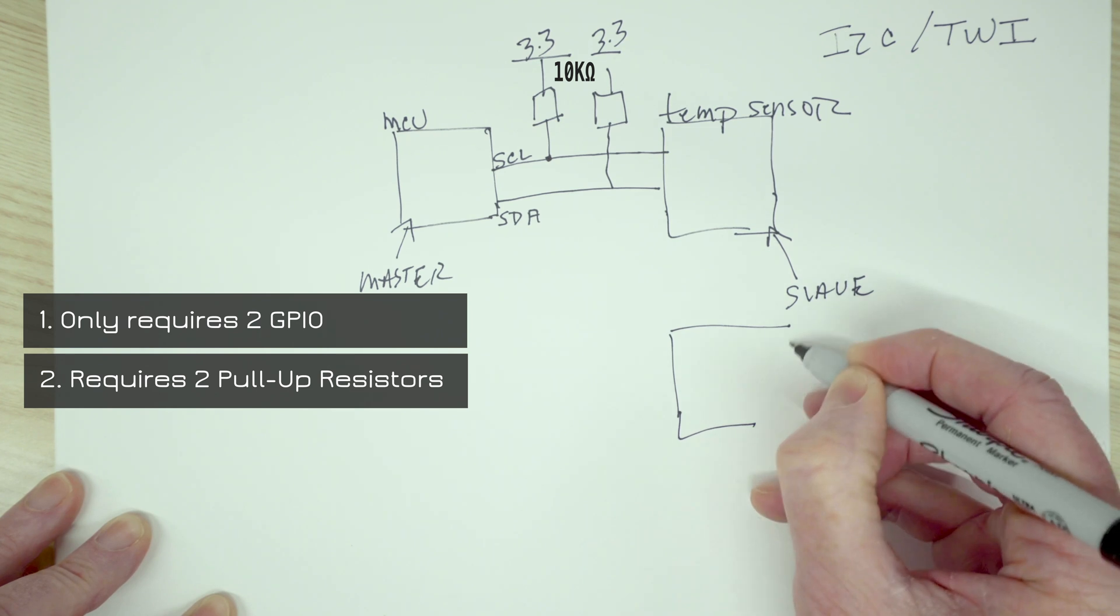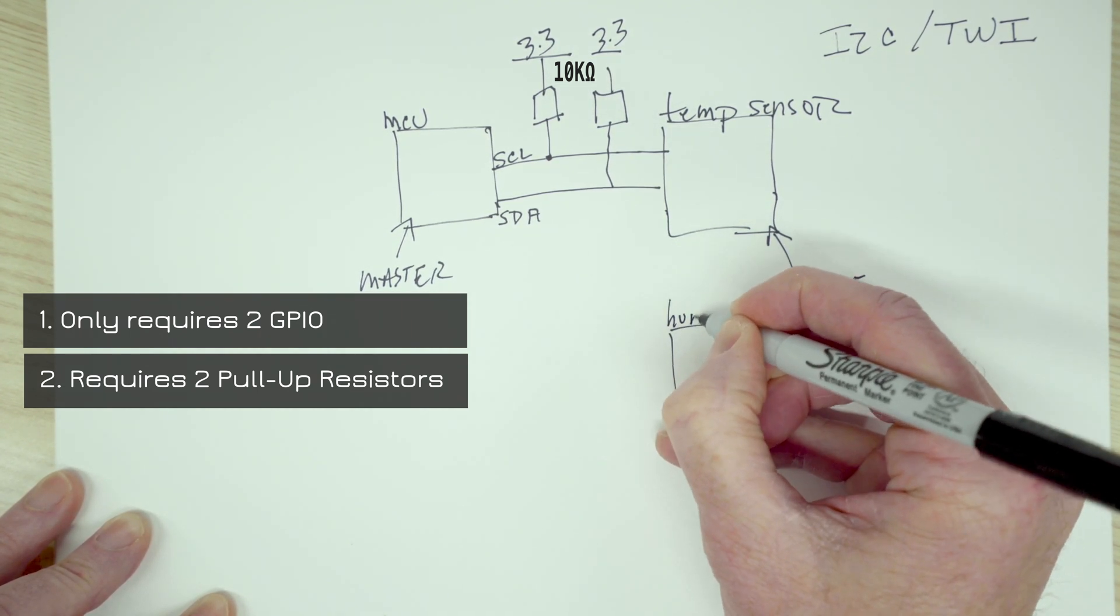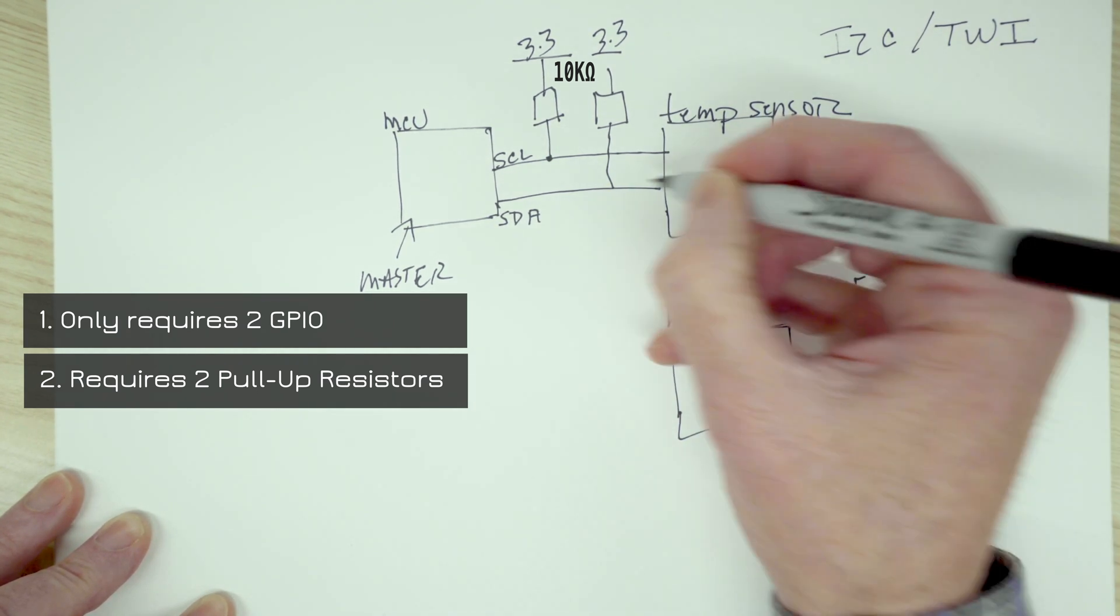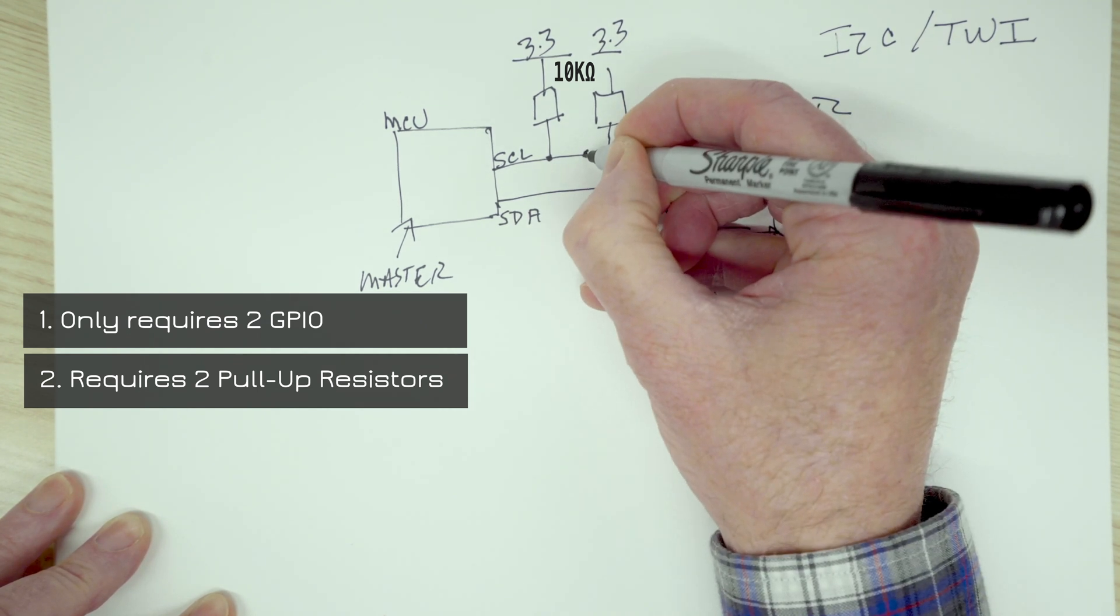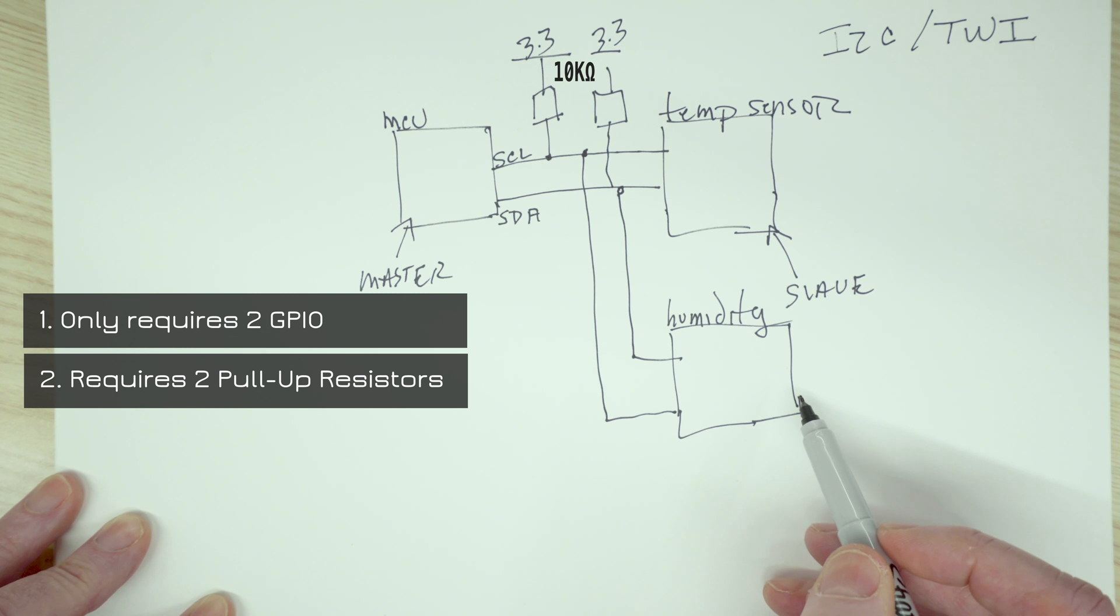So let's take a look at how we communicate with various multiple sensors. So let's say we have a second sensor here, and this is the humidity sensor. Essentially, we can just tie off these lines directly, like so, and we are now able to communicate with the second sensor.